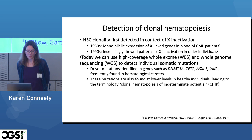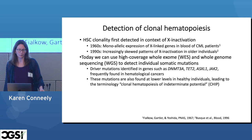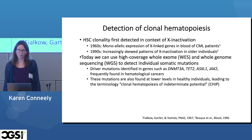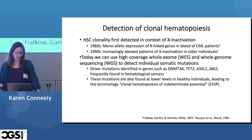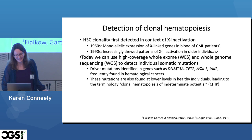Today with high-coverage sequencing data we can look at individual somatic mutations. Driver mutations have been identified in important genes including DNA methyltransferase 3A, TET2, ASXL1, JAK2, and many others frequently found in hematological cancers — which makes sense because this clonality is also how cancer begins. These mutations are also found in healthy individuals at lower levels, and at this point it's uncertain whether it might progress to cancer or lead to other phenotypic differences. For that reason it's been termed clonal hematopoiesis of indeterminate potential, abbreviated as CHIP.